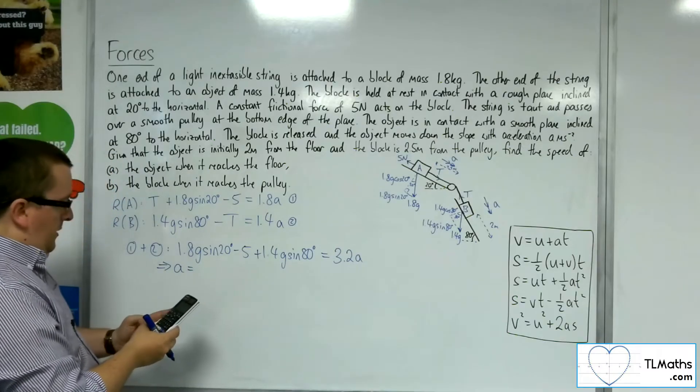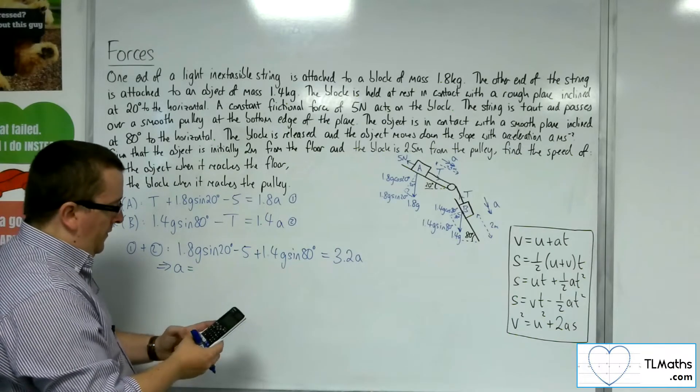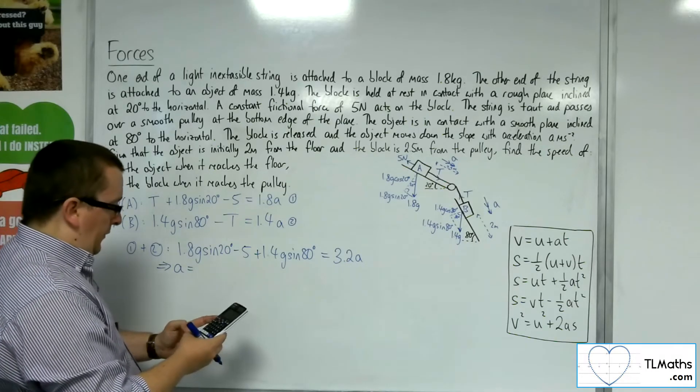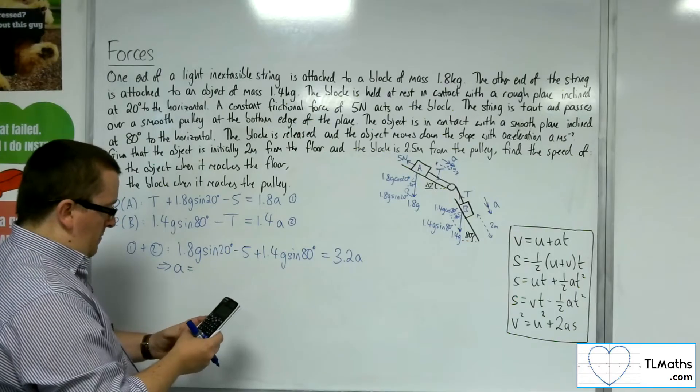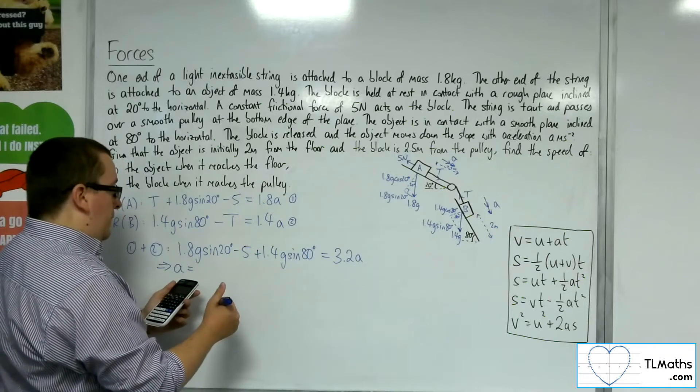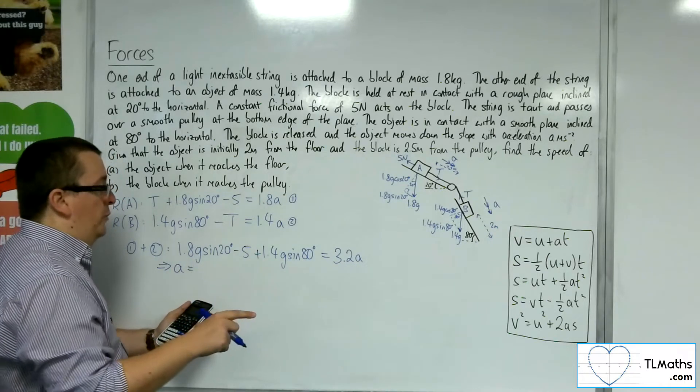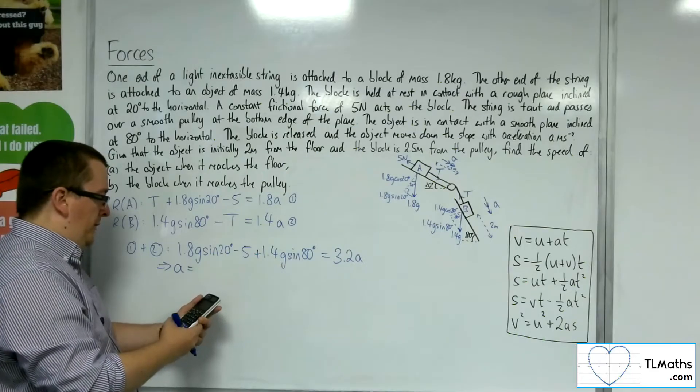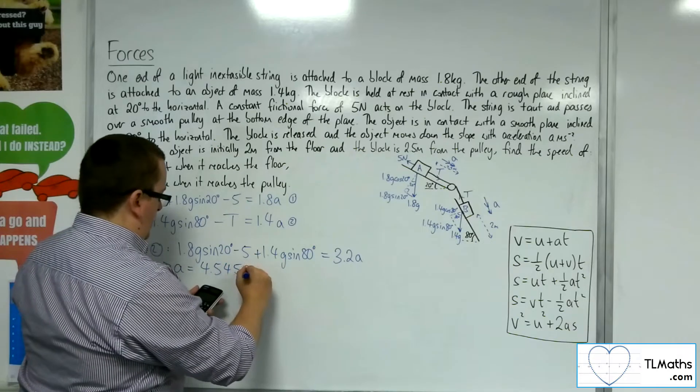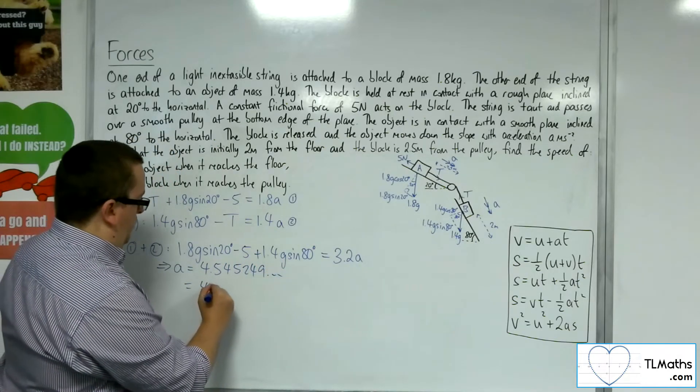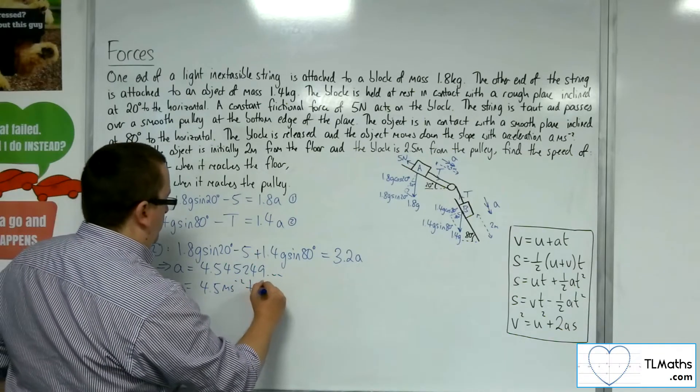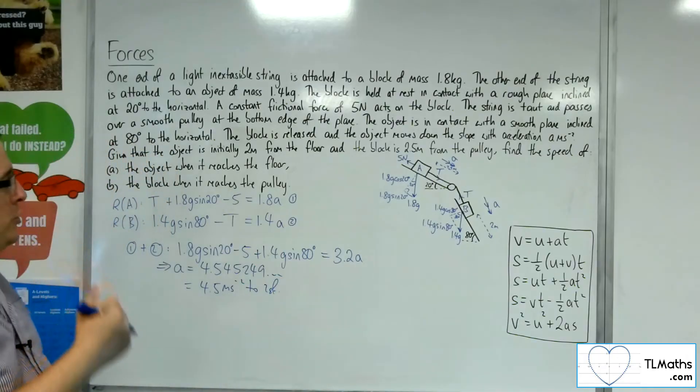I've got 1.8, taking g as 9.8, times sin 20, minus 5, plus 1.4 times 9.8 times sin 80. That's 14.544, then divide by 3.2, which gets me 4.545249, etc., which is 4.5 meters per second squared to 2 sig fig. That's the acceleration of the system.